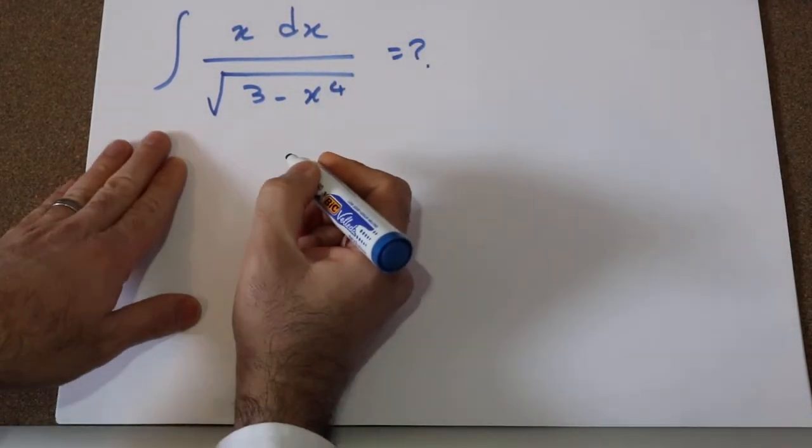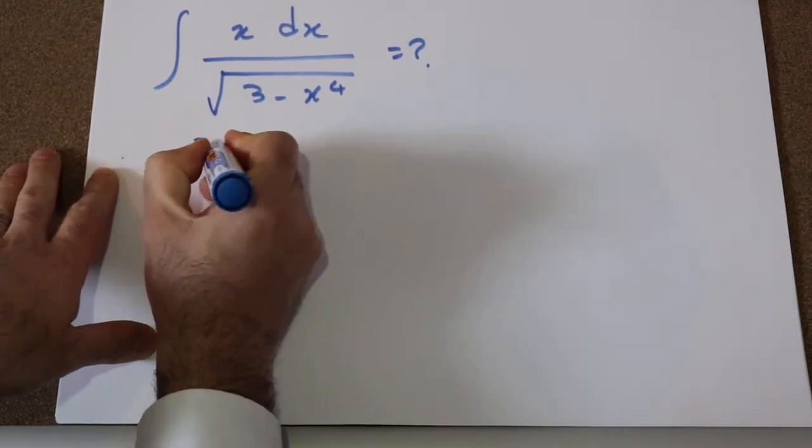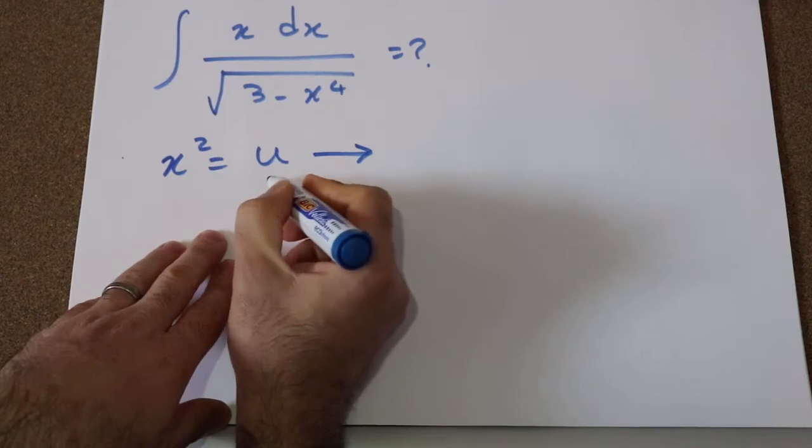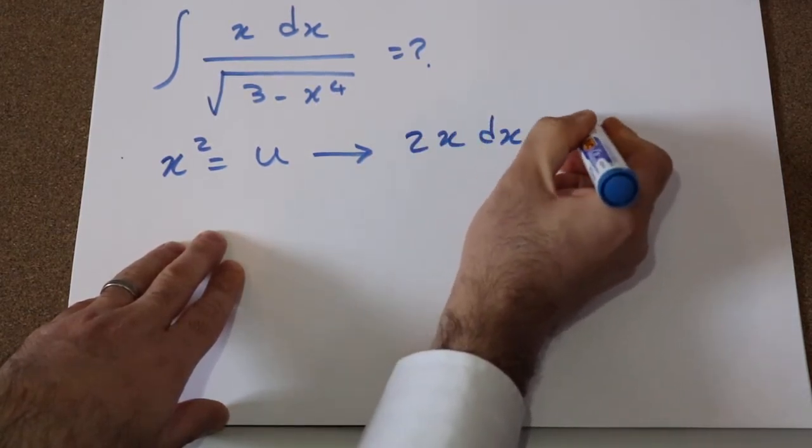Okay, so you can solve this integral using the substitution rule. So if you define x squared as u, and if you take the derivative from each side of this equation, you get 2x dx will be equal to du.